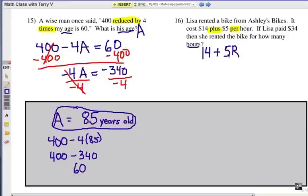And I guess I could use H instead, but let's say rental hours. Now that equals how much she actually paid, which is $34.